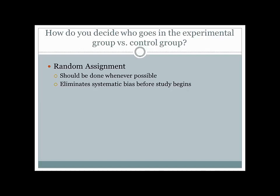If I flipped a coin for each person — heads on one team, tails on the other — I could conceivably end up with the five tallest people on one team and the five shortest on the other. Clearly these are not equal teams, but they were randomly assigned. What random assignment does is ensure that no one was systematically more likely to be in one group than the other, eliminating potential bias. We want our experiments to be as unbiased as possible. A non-random assignment creates bias because factors related to the dependent variable could be interfering.